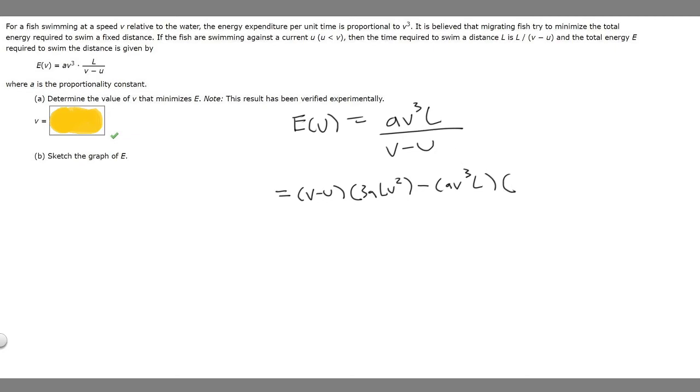Then we minus the top so av³L times the derivative of the bottom. The derivative of the bottom is just going to be 1, and so all this over the bottom squared so (v - u)². Next what we're going to want to do is simplify this out.